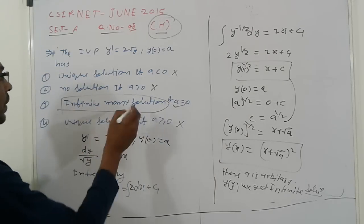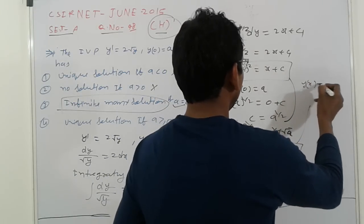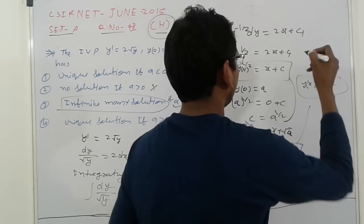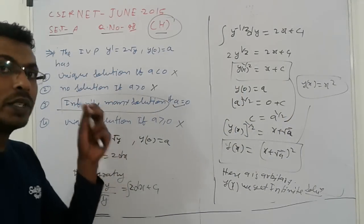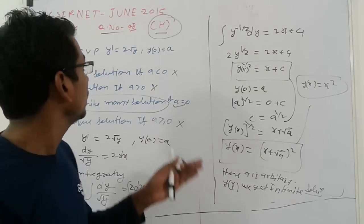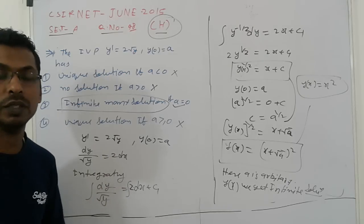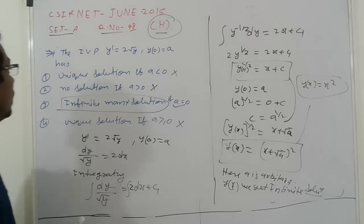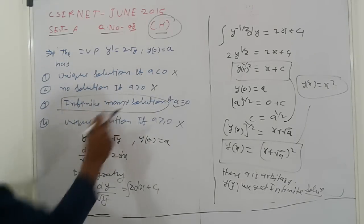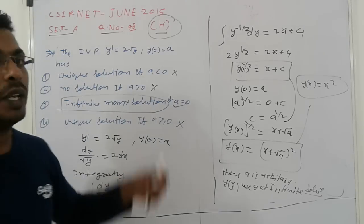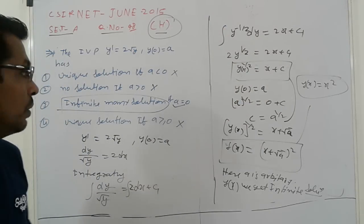But if a = 0, suppose y(x) = x². It means we get infinite number of solutions, more than one solution. More than unique solution, no solution cancels. That is the final solution - it means more than one possibility, so we get infinite number of solutions.